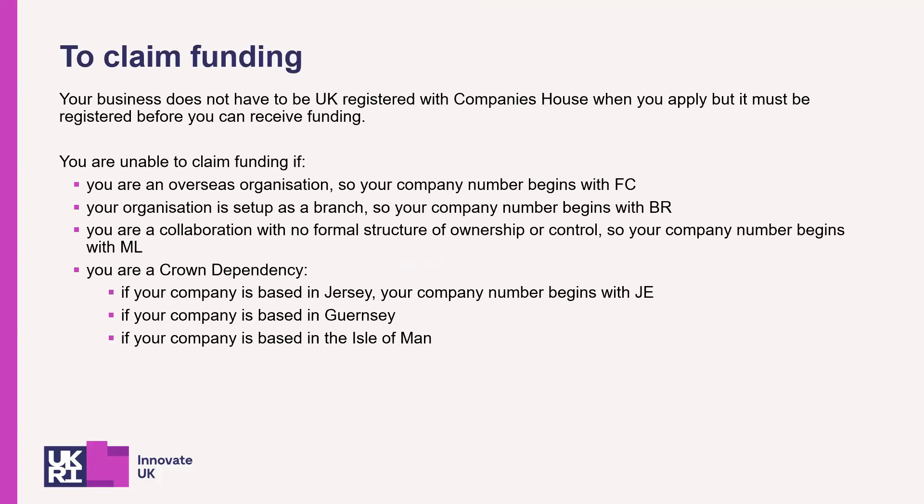To claim funding, your business does not have to be UK registered with Companies House when you apply into the competition, but it must be registered before you can receive funding. You are unable to claim funding if your company number begins with FC, BR, or ML, or you belong to any of the Crown dependencies listed on this slide.